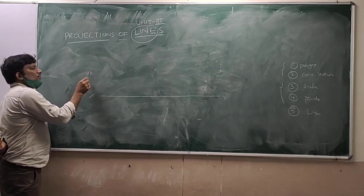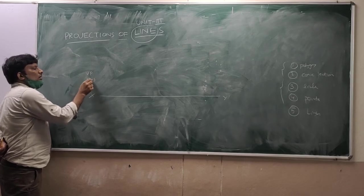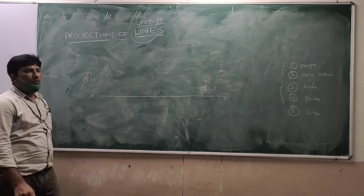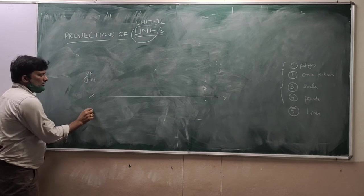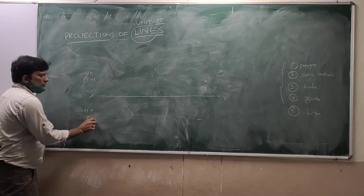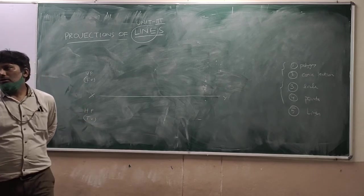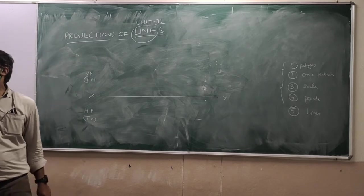This is our vertical plane. And when we are projecting on vertical plane, we will get the front view. Now this is your horizontal plane. What we are projecting on horizontal plane, that what we will get is top view.